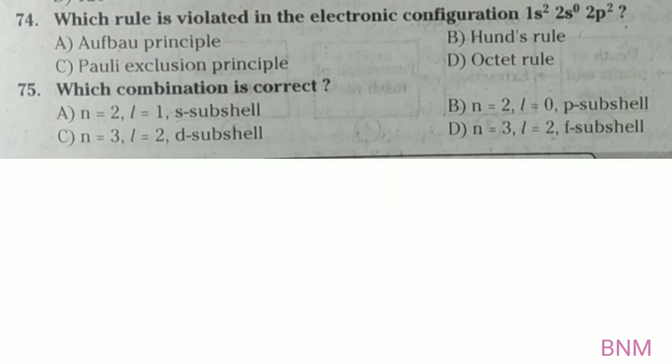Which rule is violated in the electronic configuration 1s², 2s⁰, 2p²? The least energy orbital should be filled first — this violates the Aufbau principle.